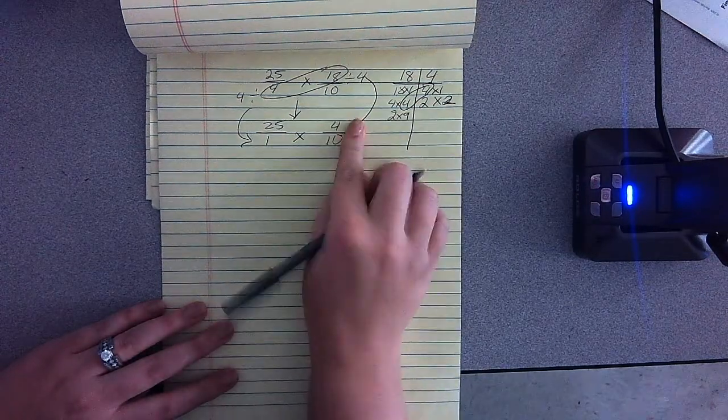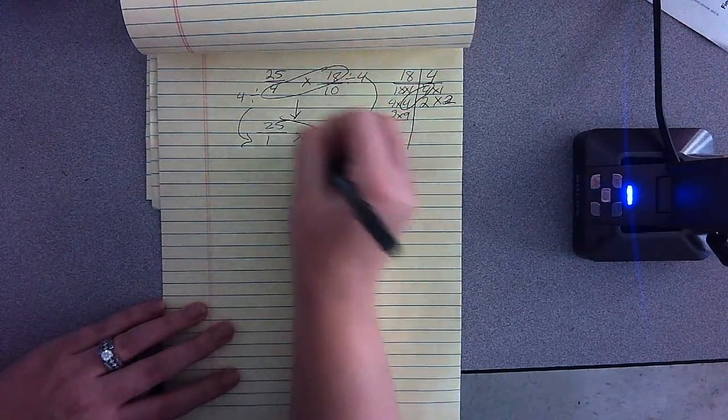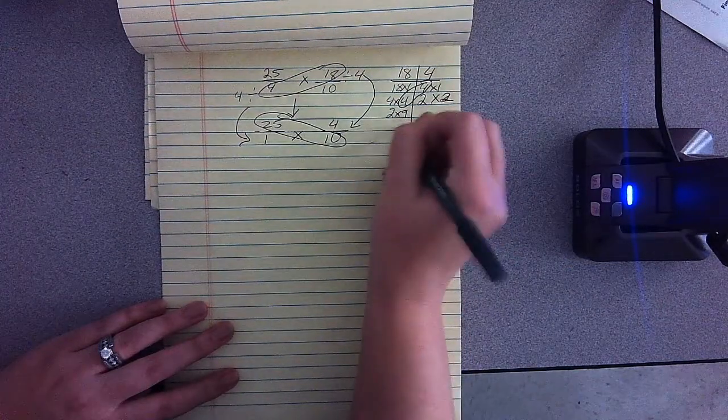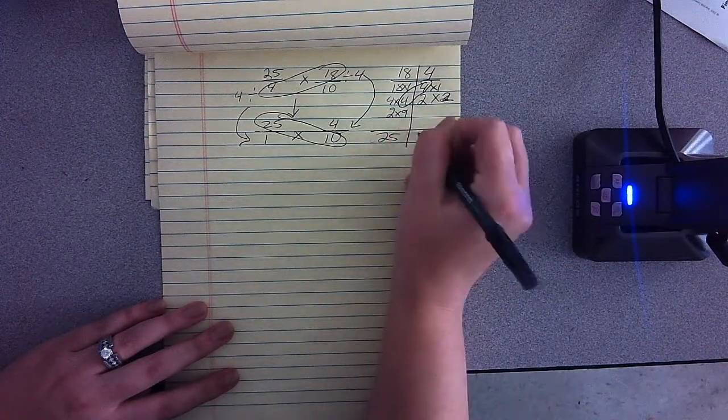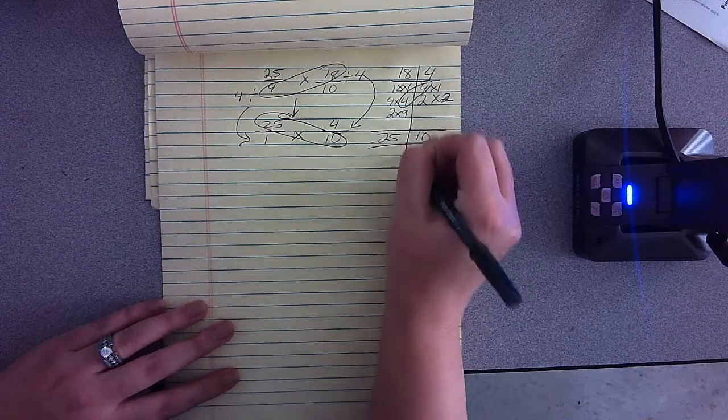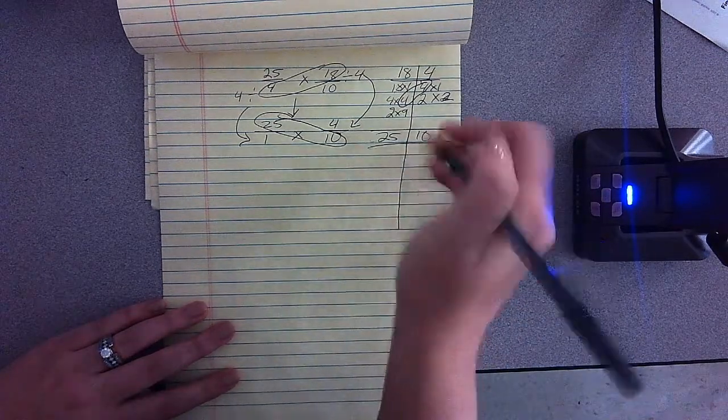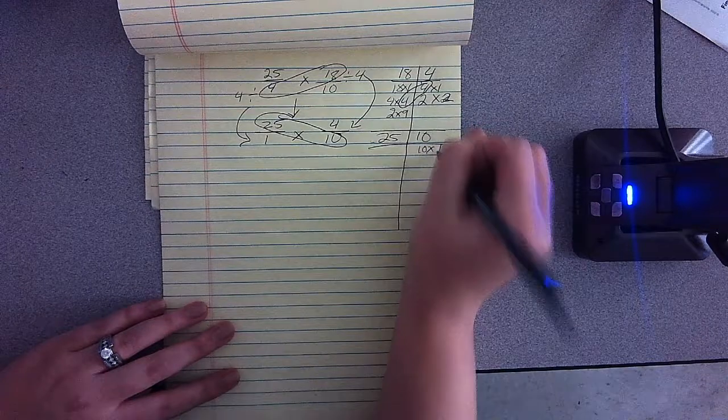Alright, so now this is going to stay, and now I'm going to look at these: 25 and 10. I'm going to write them again over here, and I'm going to list my factors once again, starting with 10 because it is the smaller number with the lesser value.